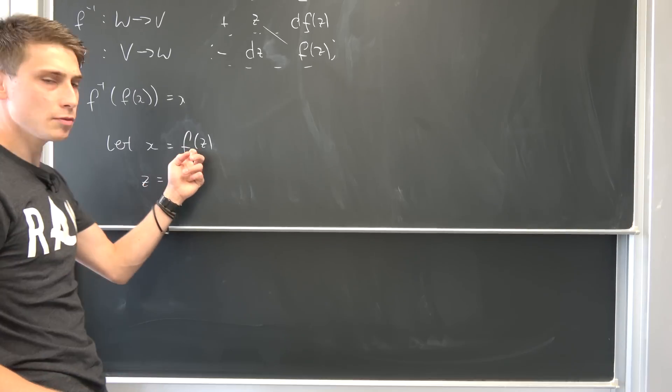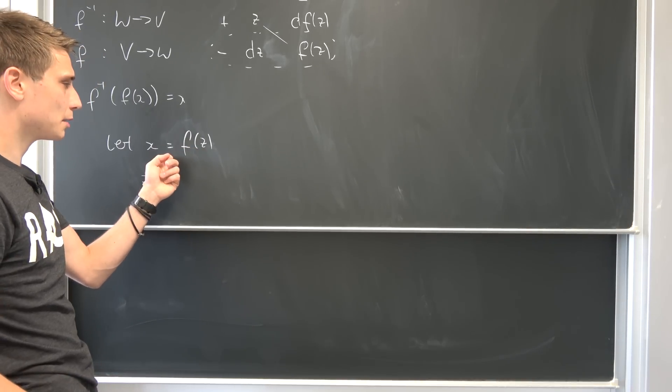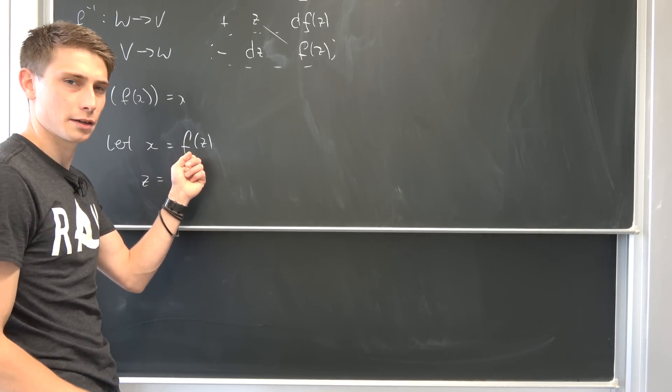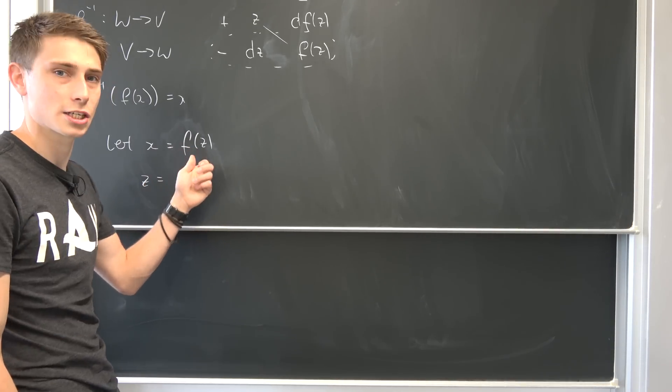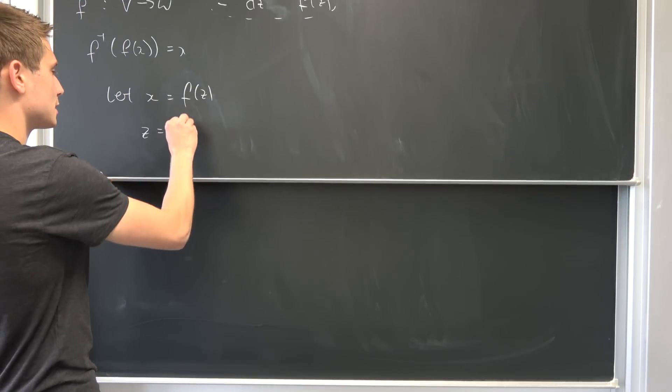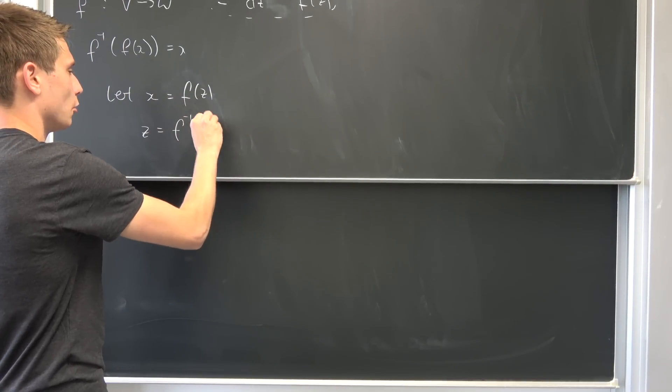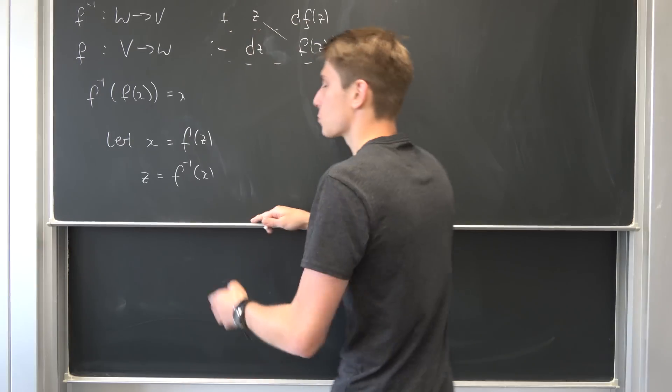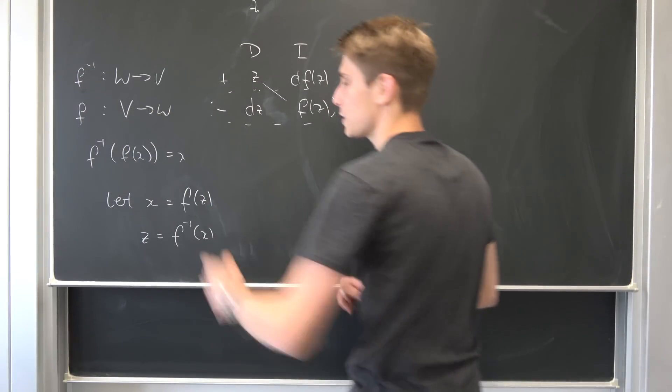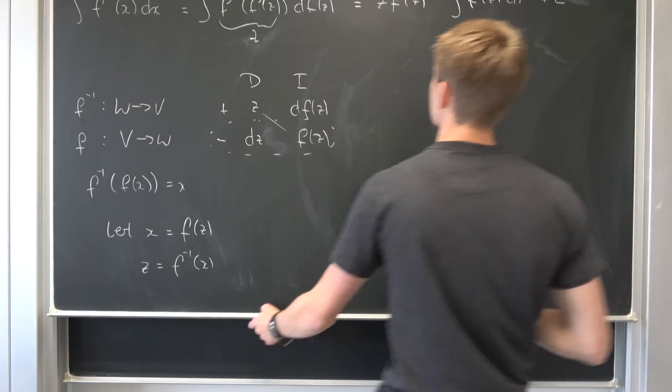z is nothing but, if we use the inverse function on both sides, we end up with the inverse function of the function of z. So that's just argument z. So that means z is nothing but the inverse function of x, where the inverse function is once again this thing we started off.